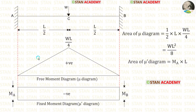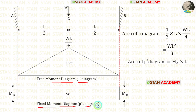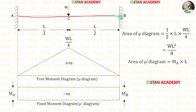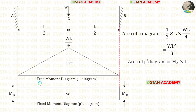To find out the fixed end moments, we have to draw two diagrams. One is the free moment diagram or μ diagram. Another is the fixed moment diagram or μ' diagram. To draw the free moment diagram, we have to consider the fixed beam as a simply supported beam. If a point load is acting in the center of a simply supported beam, the formula for the maximum bending moment is WL/4. We make the free moment diagram the same way we draw the bending moment diagram in simply supported beams.